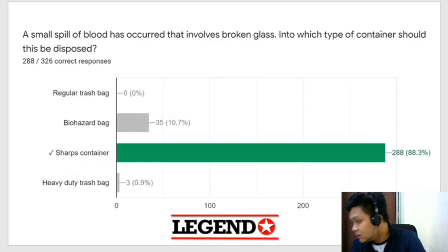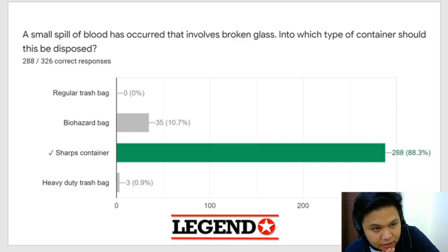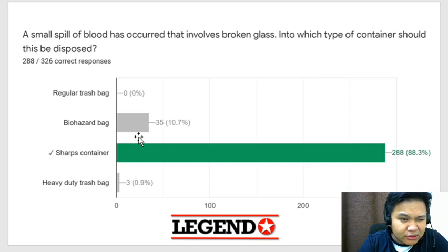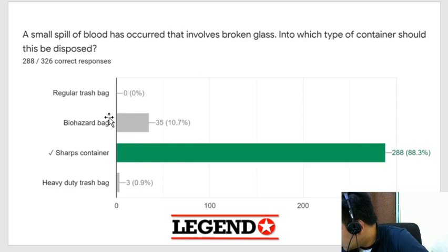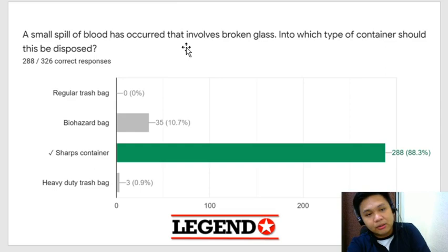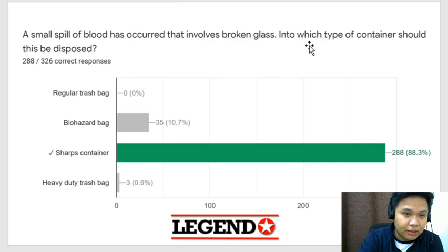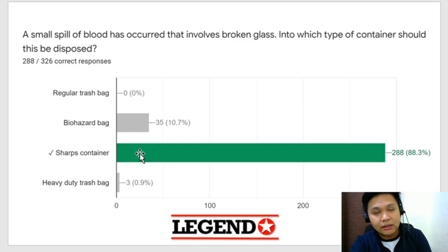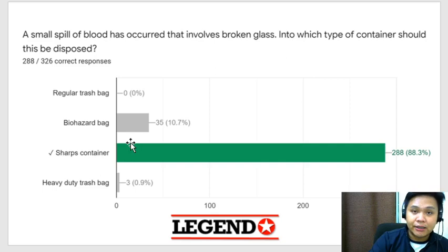This is the last question: a small spill of blood has occurred that involves broken glass — into which type of container should this be disposed? The answer is a sharps container. Since this is broken glass, it is considered a physical/sharp hazard — priority is containment in a sharps container. Then, since there is blood on the broken glass, you also label that sharps container as biohazard.